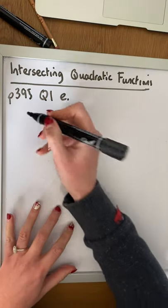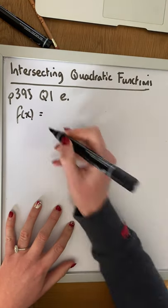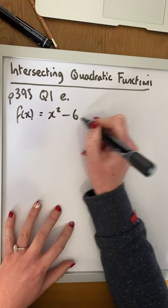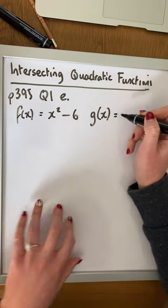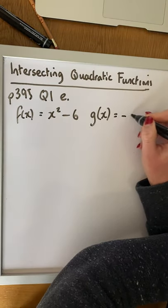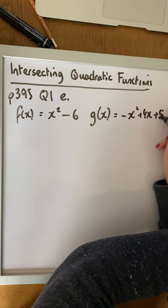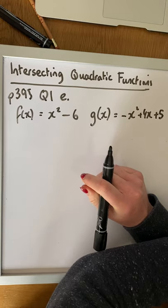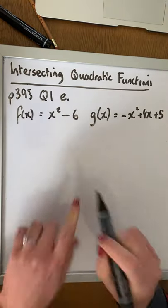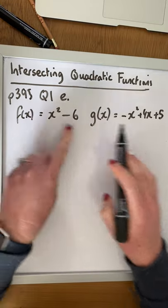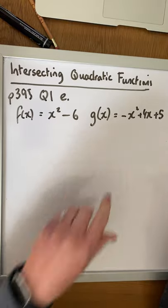So we are given two functions. We are given the first function f of x is equal to x squared minus 6, and we are also given g(x), which is minus x squared plus 4x plus 5. So those are our two quadratic equations. Alright, so we're looking at two quadratics intersecting. Obviously, this is a positive quadratic, this is a negative quadratic, so this will be a u-shaped graph, this will be an n-shaped graph.